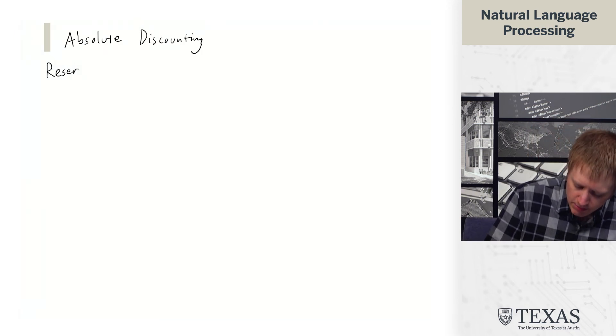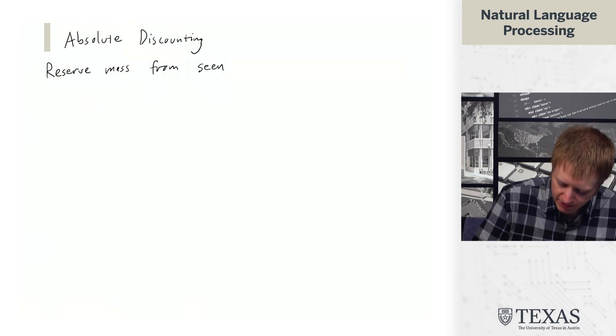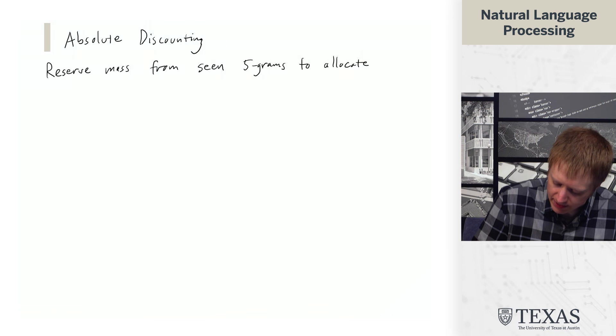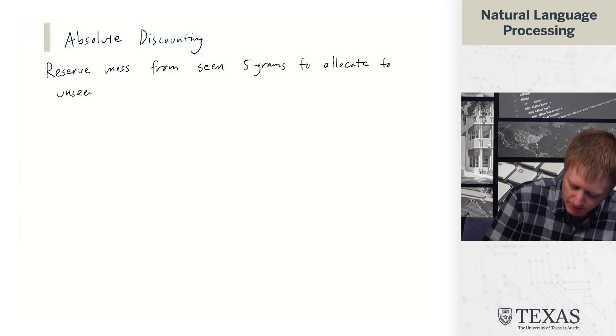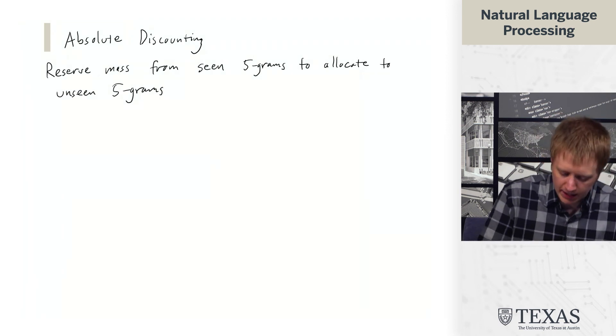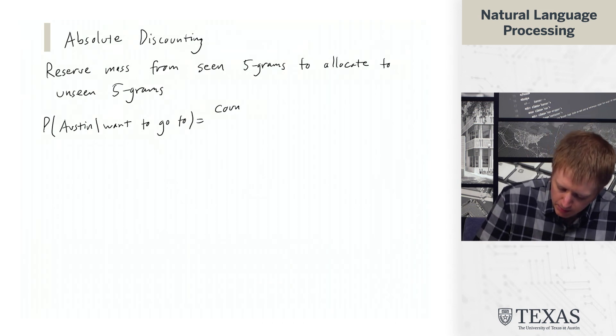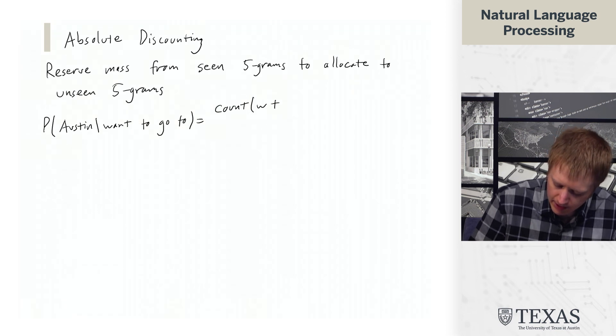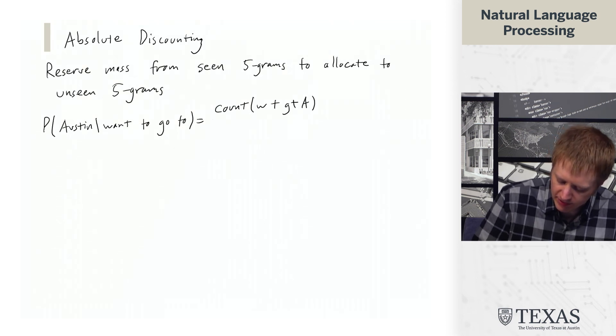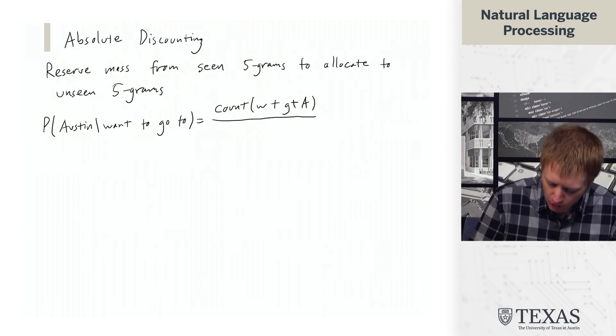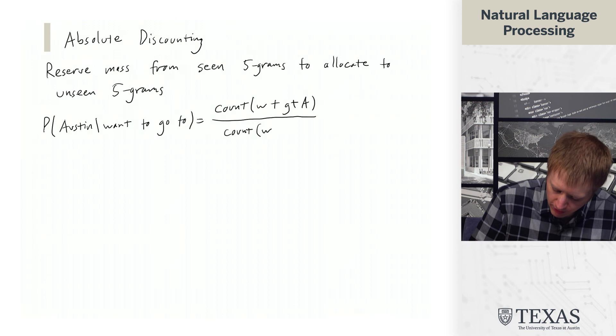The idea is that we reserve mass from seen 5-grams to allocate to unseen 5-grams. And so concretely what this means is if we have p of Austin given want to go to, it's defined in the following way. I'm going to abbreviate this. So this is the count of want to go to Austin over the count of want to go to.